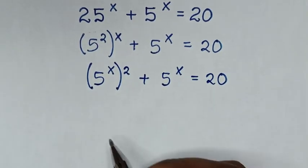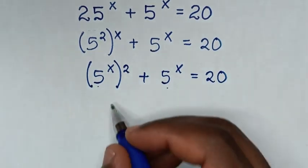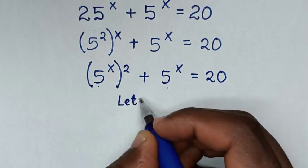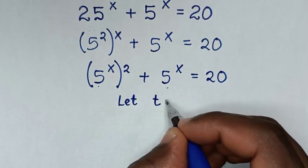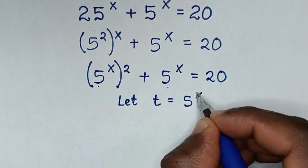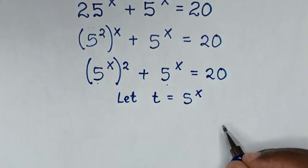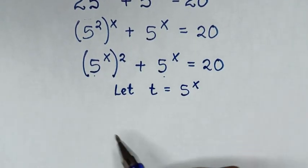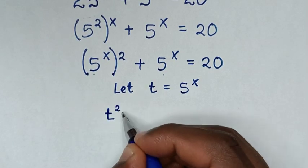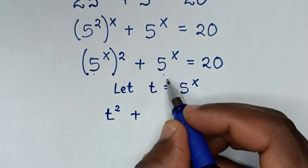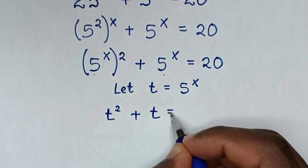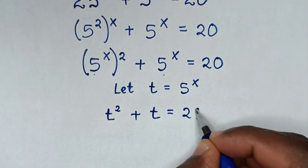Now, in here 5 power of x is common. So we let t is equal to 5 power of x. Then it will be t squared plus t is equal to 20.